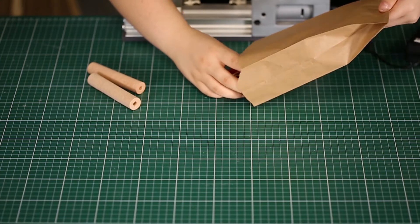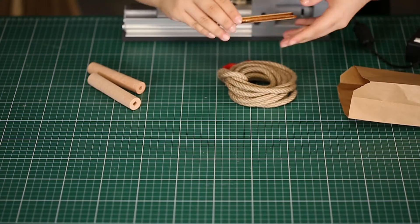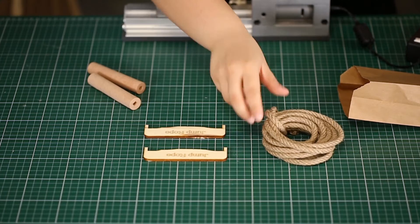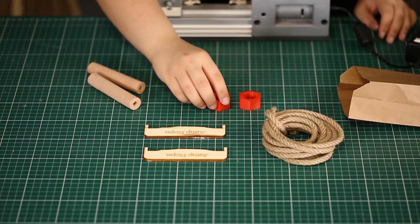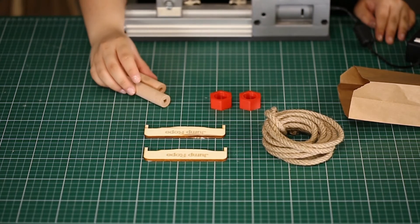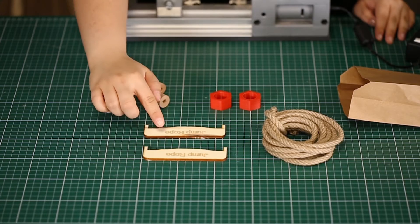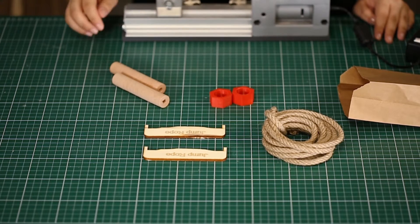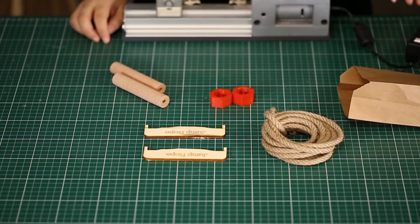As you see, all the materials that we need for this model are available in our kit. These are wooden cylinders, guide pieces, 3D printed parts for handles and our rope.